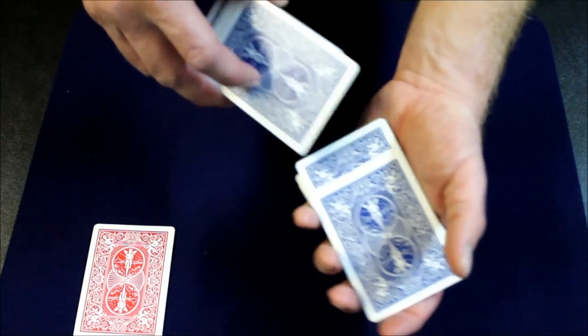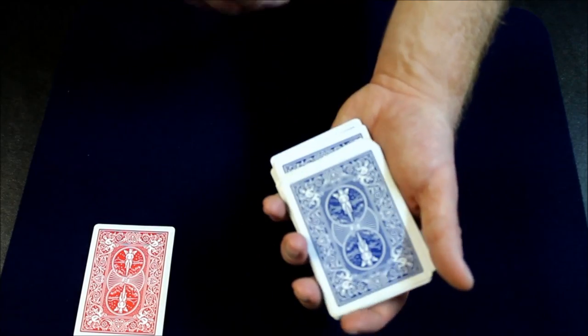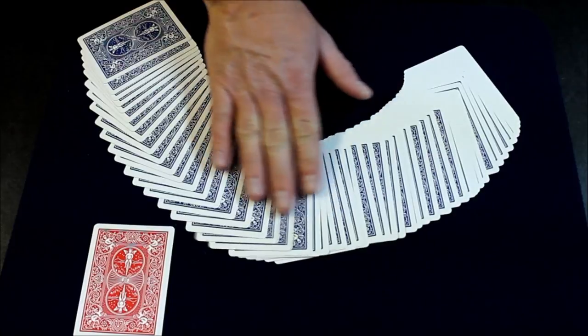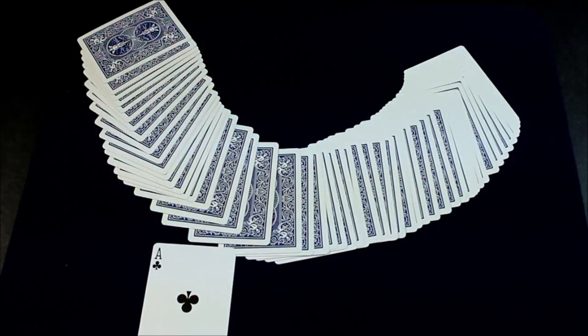So you ask someone to stop. Show that card. Drop it into the middle. Now again when you spread it, you're gonna show that there's no other red cards except for this one. And that turns out to be the second card that they've selected.